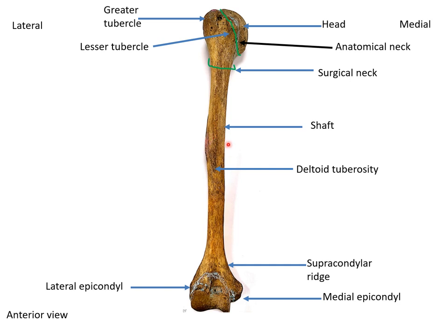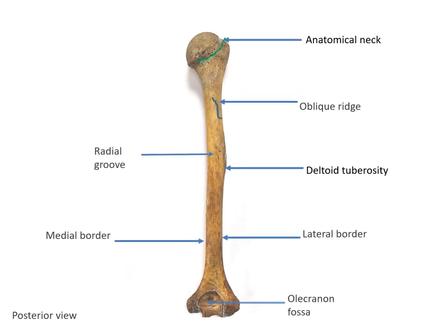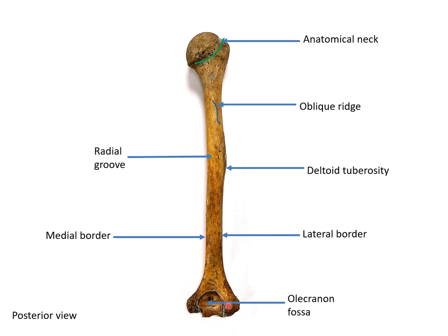On the shaft there is an important tuberosity on the anterior aspect - the deltoid tuberosity. The lower end contains the lateral epicondyle, medial epicondyle, and the supracondylar region, as well as the capitulum. On the posterior aspect, moving from the lower end, we have the olecranon fossa, certain borders, and on the posterior shaft there is the radial groove for passage of the radial nerve. At the surgical neck there is passage of the axillary nerve, and behind the medial epicondyle there is passage of the ulnar nerve.